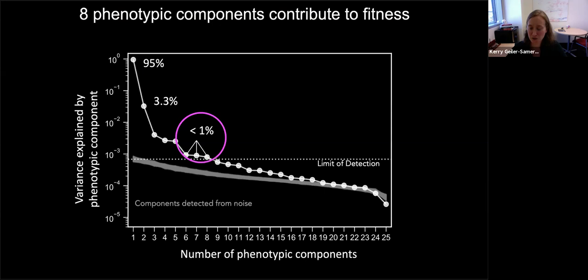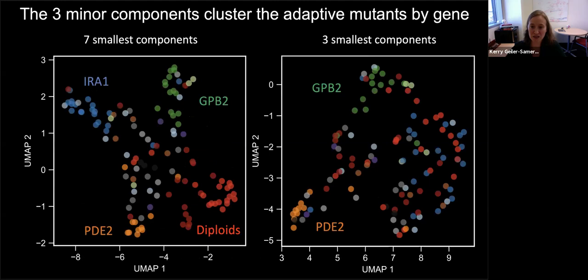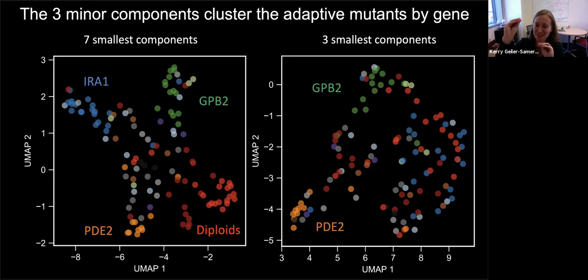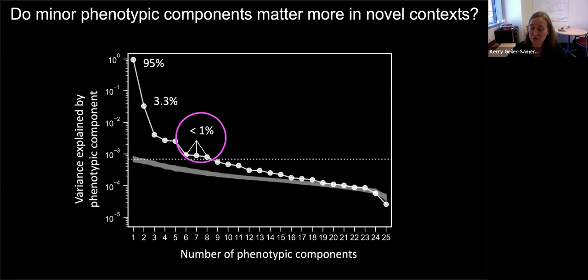This was really surprising to me because GPB-2 and PDE-2 are negative regulators of the same pathway, and I thought mutations in those genes did the same thing — but they clearly don't. If you have the fitness profile for a mutant, you're able to tell whether that mutant is in GPB-2 or PDE-2, even using only fitness data from subtle perturbations of the original glucose-limited condition. That means these mutants have different effects that matter in different environments, and it hopefully convinces you that these components are capturing real biological signal rather than noise.